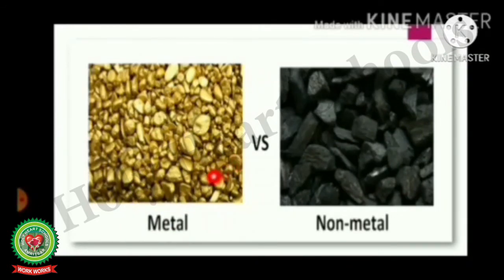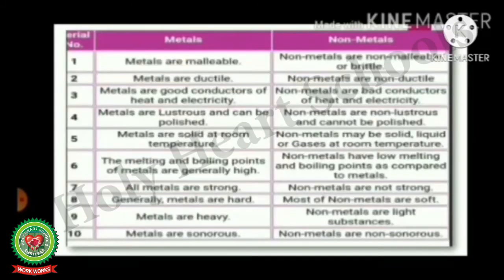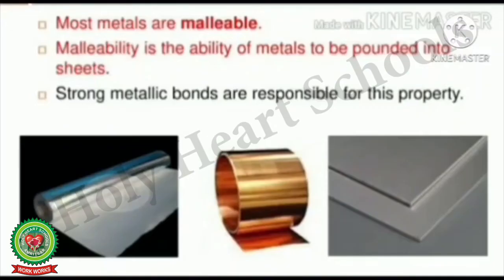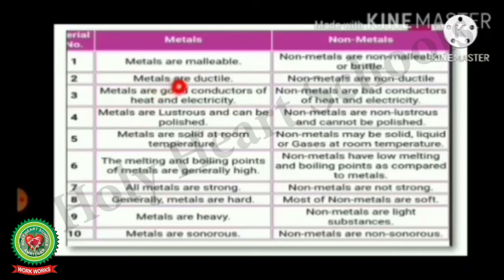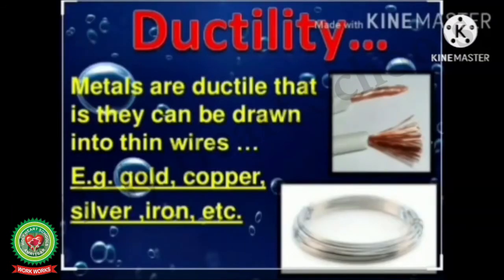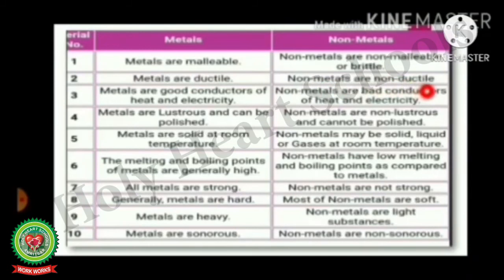We will now discuss points of comparison between metals and non-metals. Metals are malleable — meaning metals can be beaten into thin sheets — whereas non-metals are non-malleable. Metals are ductile, meaning metals can be drawn into wires, whereas non-metals are non-ductile and cannot be drawn into wires.